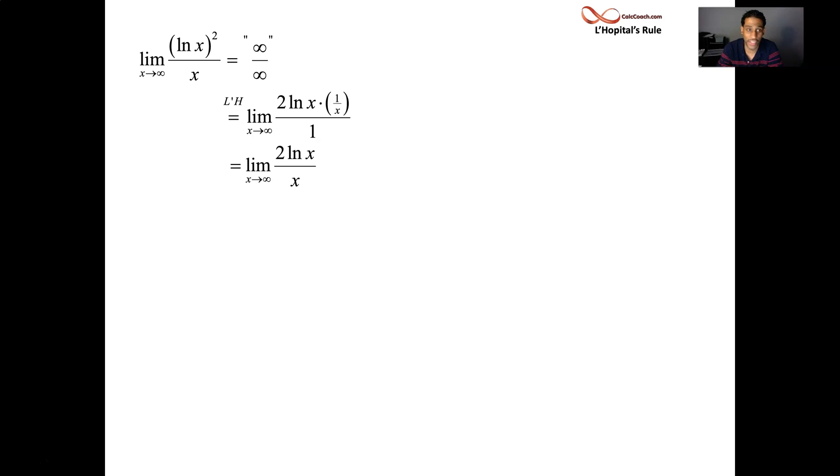And x is still going to infinity. And we are still in the same format, infinity over infinity. But that's okay. This is our first example of L'Hôpital's rule requiring more than one iteration. And so, we do it again. We trade this limit in for the derivative of the numerator, 2 over x. Divided by the derivative of the denominator, 1. What happens to 2 over x as x goes to infinity? 2 divided into infinitely many pieces, it's going to go to 0. That's the value of your limit.